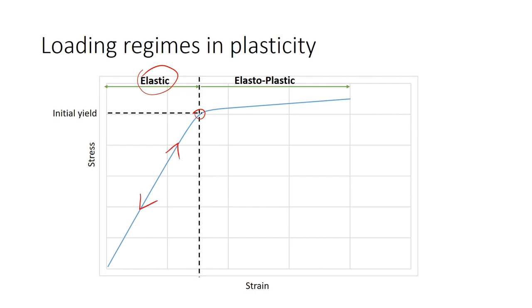The second one is the elasto-plastic regime. In real materials, beyond initial yield, there will be both elastic and plastic deformation. In elasto-plastic regime, the loading and unloading paths are different. The unloading path is elastic and will be parallel to this line.